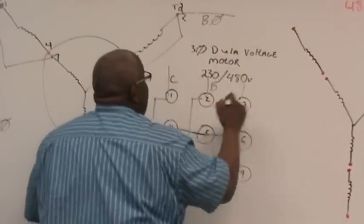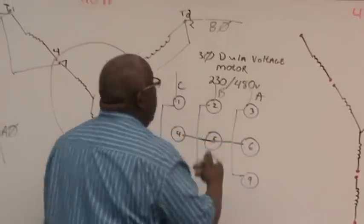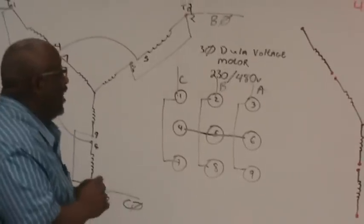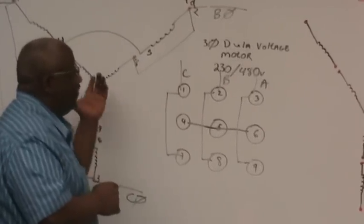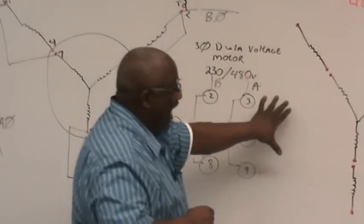Typically, we'll swap C with A, and this will provide us with a counterclockwise rotation. Now, our windings are in parallel, and that's for low voltage. But what if we need high voltage?